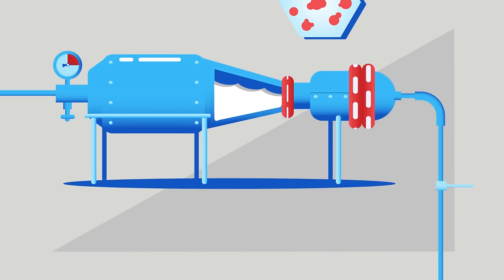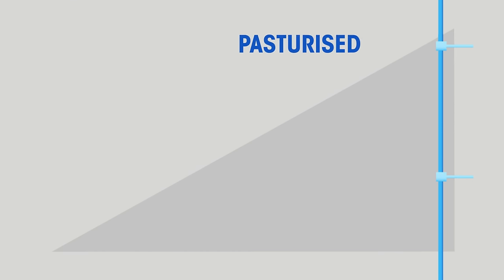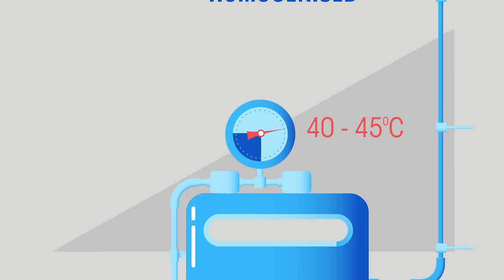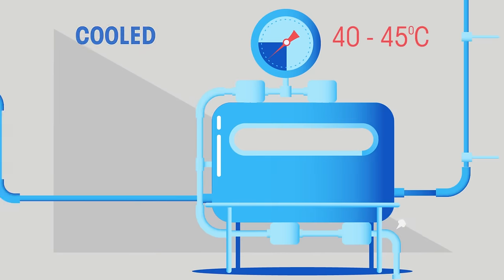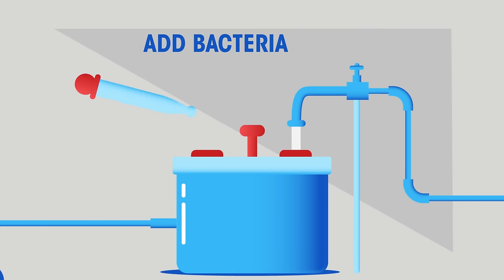So we've sterilized our equipment, then pasteurized and homogenized the milk. Now the mixture is cooled to 40 to 45 degrees Celsius and we add our special yogurt-making bacteria. The mixture needs to be cooled first so that the bacteria aren't killed by the high temperature.